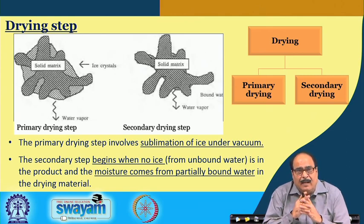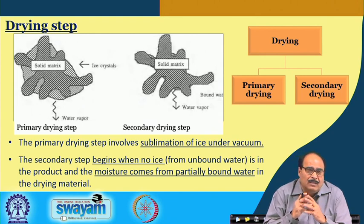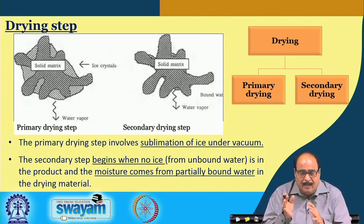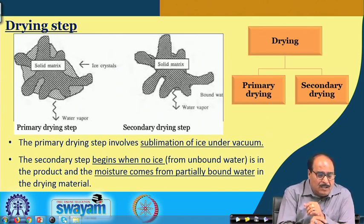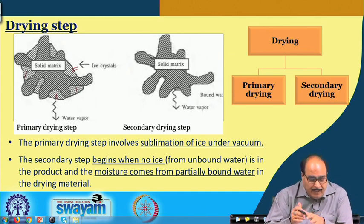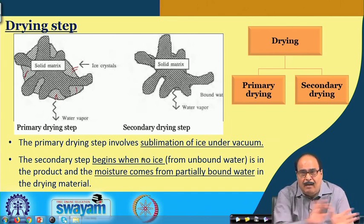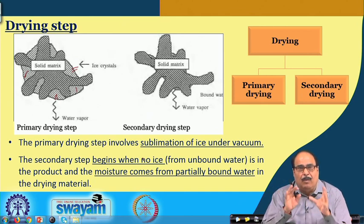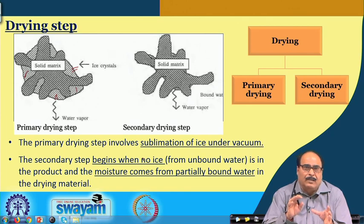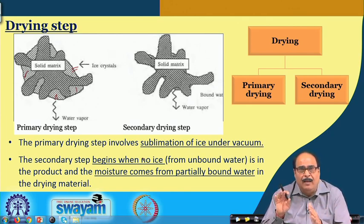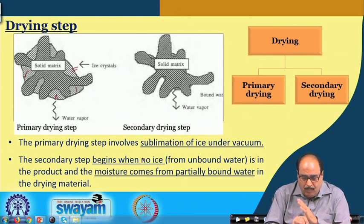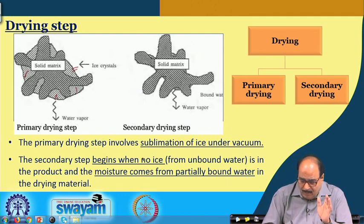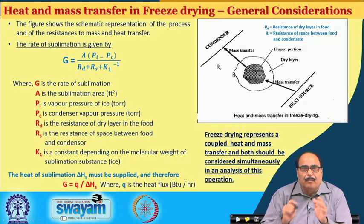The drying step has two components: primary drying and secondary drying. The primary drying step involves sublimation of ice under vacuum. The secondary step begins when all ice has been sublimed — that is, all unbound water has been removed. In secondary drying, moisture removal comes from partially bound water in the drying material. These primary and secondary drying steps are important for process analysis.